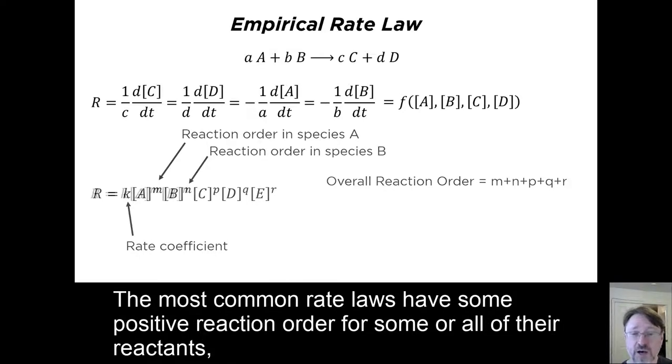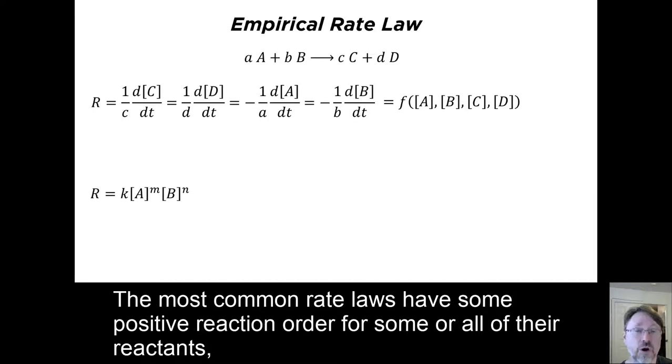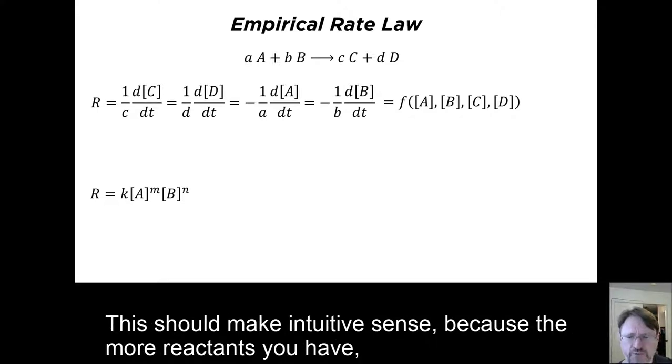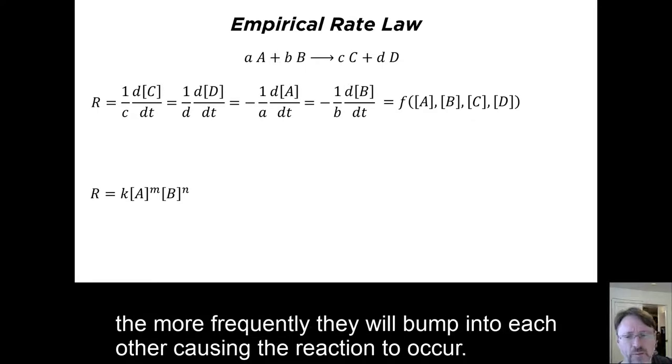The most common rate laws have some positive reaction order for some or all of their reactants, meaning that the reaction happens faster when the concentrations of the reactants are higher. This should make intuitive sense, because the more reactants you have, the more frequently they will bump into each other causing the reaction to occur.